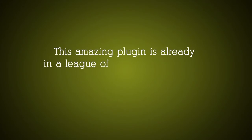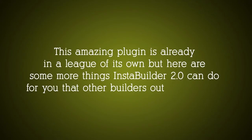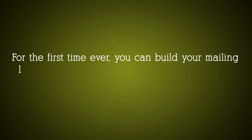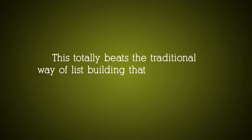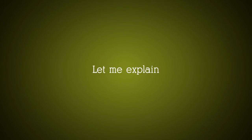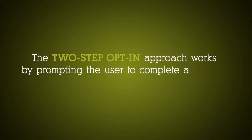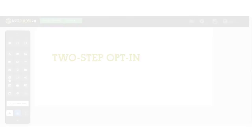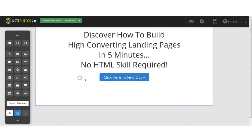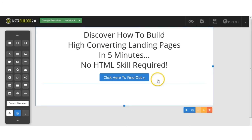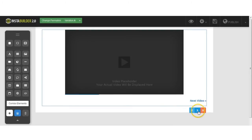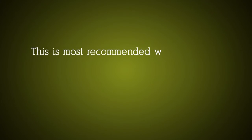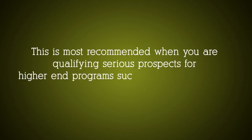This amazing plugin is already in a league of its own. But here are some things InstaBuilder 2.0 can do that other builders cannot. For the first time ever, you can build your mailing list to electrifying results using our two-step and three-step opt-in technology. The two-step opt-in approach works by prompting the user to complete an action before accessing the opt-in form, which has helped build better quality leads for marketers. The three-step approach engages more user interaction through two initial steps before revealing the opt-in form, most recommended when qualifying serious prospects for higher-end programs such as coaching and consultation.